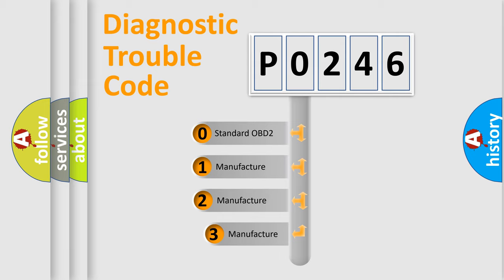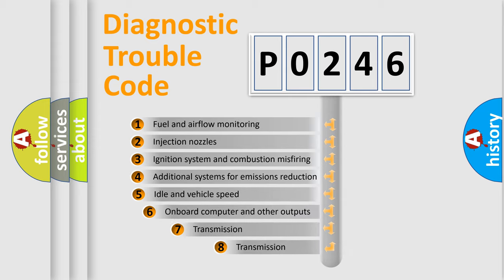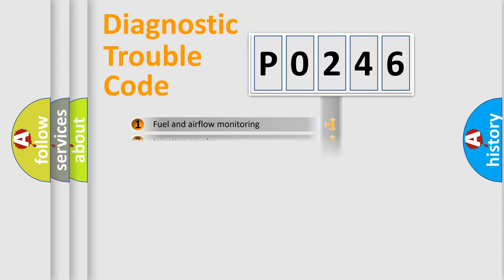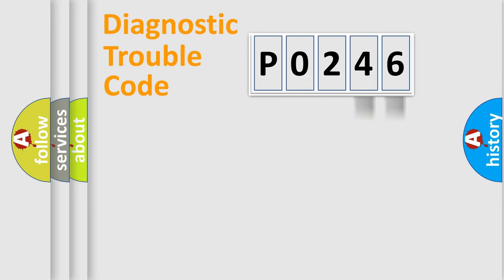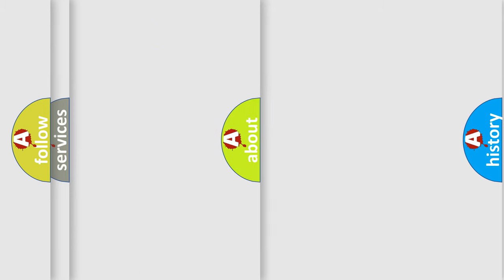If the second character is expressed as zero, it is a standardized error. In the case of numbers 1, 2, or 3, it is a more specific expression of a car-specific error. The third character specifies a subset of errors. This distribution is valid only for the standardized DTC code. Only the last two characters define the specific fault of the group, and this is valid only if the second character is expressed by the number 0.